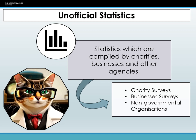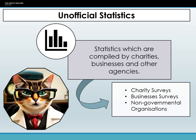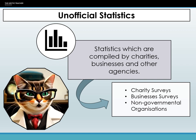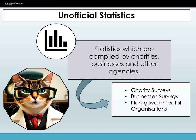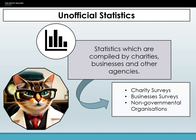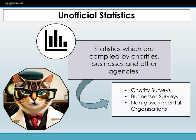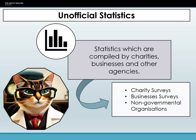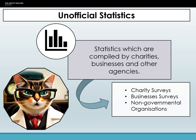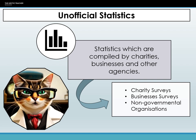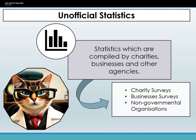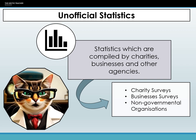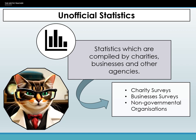Similarly, when a student group in a university undertakes a research project to understand the impact of social media on mental health among their peers, the data they collect also falls into this category. These statistics are particularly valuable in sociological research because of their diversity and specificity. Governmental bodies often prioritize broad societal indicators, like unemployment rates or GDP growth, due to their wide-ranging implications. In contrast, unofficial statistics can address more localized or niche concerns, offering a degree of flexibility in their collection and methodology which can be tailored to address specific questions, providing potentially more nuanced insights.